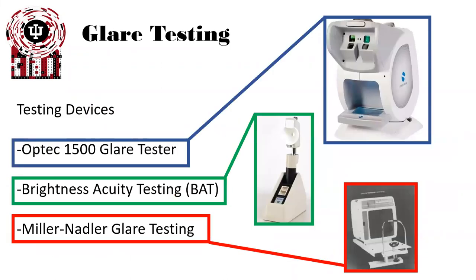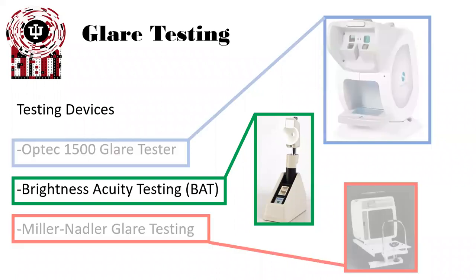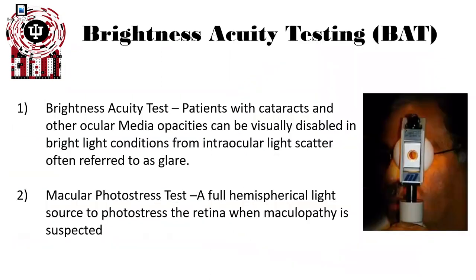There are a number of different glare testing devices out there. Here's the Optitec 1500 glare tester. Here's the brightness acuity tester. And if you're old enough, you might have seen a Miller-Nadler glare tester. Nowadays, the most common one performed in most offices is brightness acuity testing, or BAT testing.